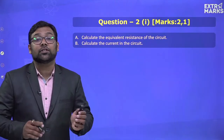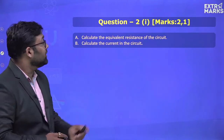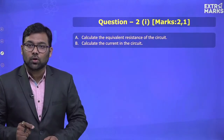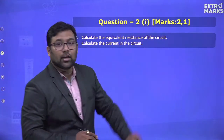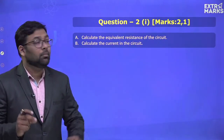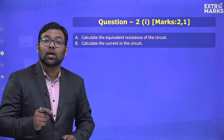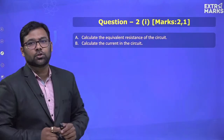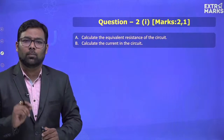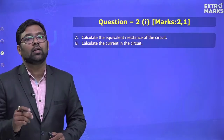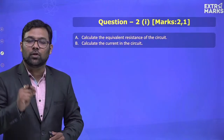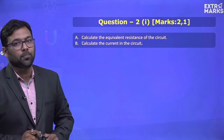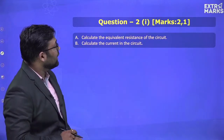Now we jump to the subjective portion of the mock test. Be very careful here — allocate time according to the marks each question carries. For a one-mark question, a single crisp point with two to three lines is sufficient. For a two-mark question, you need at least two small paragraphs, each containing one important point. Both paragraphs together should earn you the full two marks.